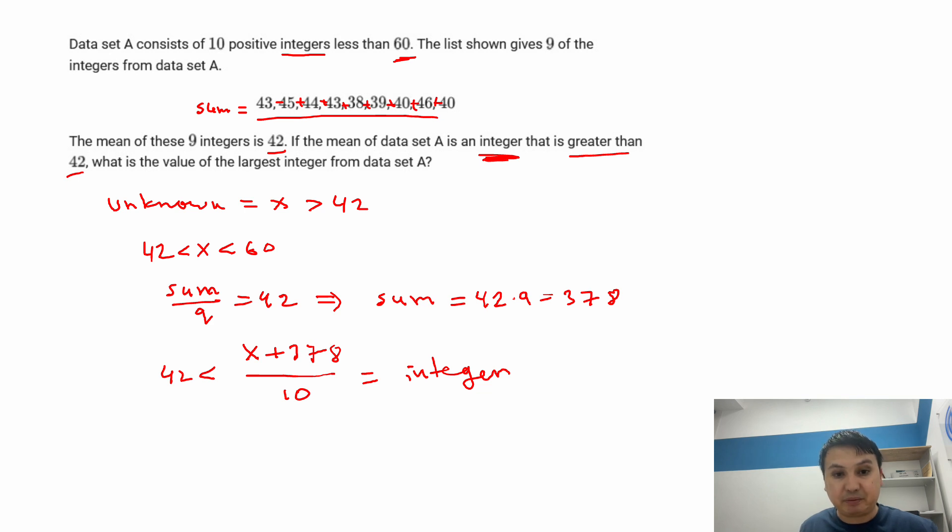Right. So then we need to look at what is the sort of the x that makes it an integer. So it means x plus 378 is divisible, must be divisible by 10. Well, what are the options? 42. If x is equal to 42, it would be divisible.